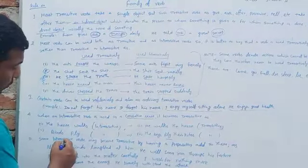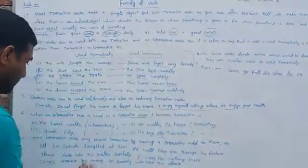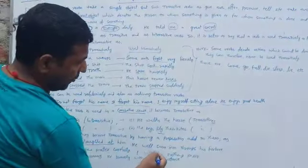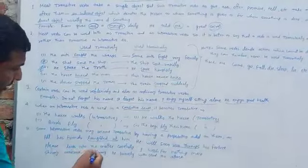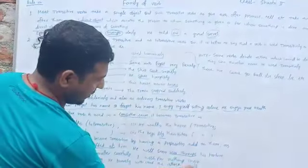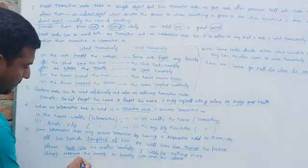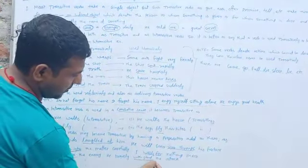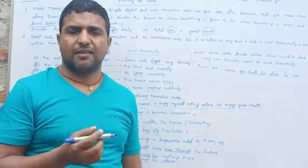In rule 5: intransitive verbs may become transitive by having a preposition added to them. For example: 'All his friends laughed at him' — 'at' is the preposition. 'He will soon run through his fortune.' 'Please look into the matter carefully' — 'look' is the verb, 'into' the preposition. 'I wish for nothing more.' 'Shivaji overcame the enemy.' 'He bravely withstood the attack.' Thank you.